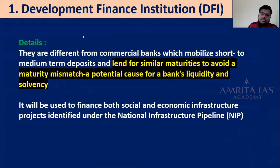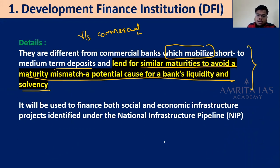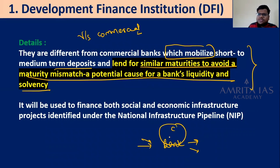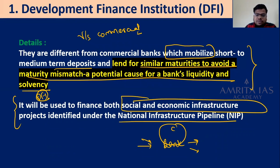DFIs are different from commercial banks. Commercial banks mobilize short-to-medium-term deposits and lend for similar maturities to avoid maturity mismatch — a potential cause for bank liquidity and solvency issues. Banks get money short-to-medium term and give money short-to-medium term — for example, savings bank deposits can be withdrawn anytime. Development Financial Institutions, by contrast, are set up to finance both social and economic infrastructure identified under the National Infrastructure Pipeline.